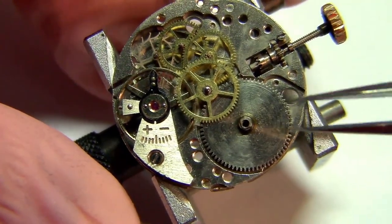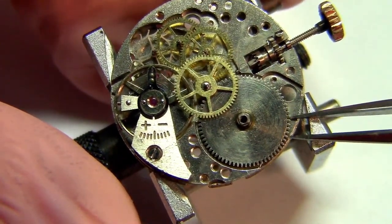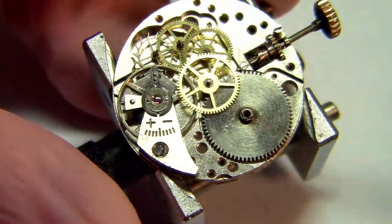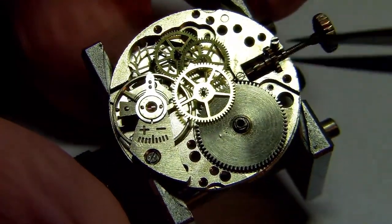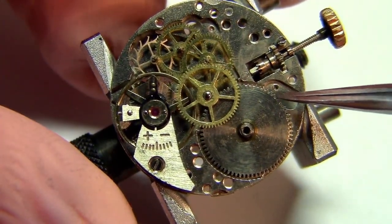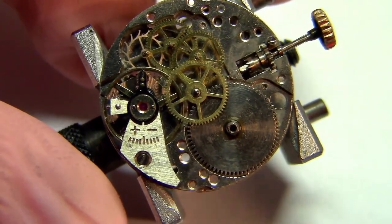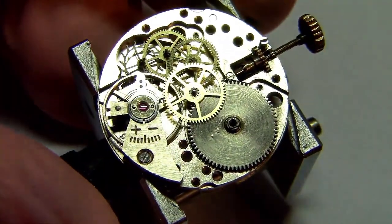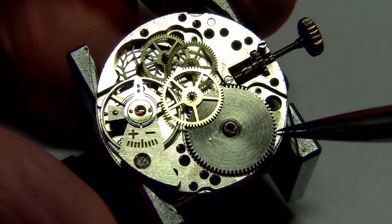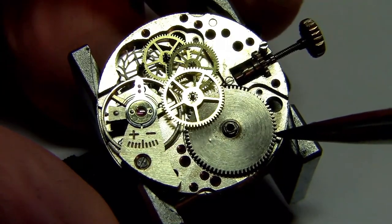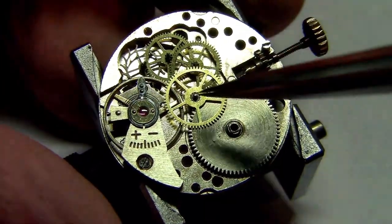If I move the barrel a little bit, you see that all the other wheels try to move as well. Everything is a little bit loose here because it's without the support of the bridge. I move the barrel, which is the energy source, and the energy flows through.